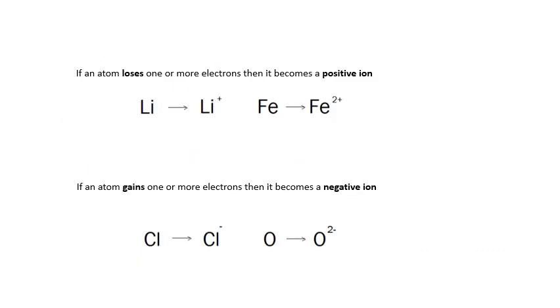Last slide. If an atom loses one or more electrons, then it becomes a positive ion. If lithium loses an electron, it becomes Li plus, a lithium ion. If an iron atom loses two electrons, it becomes Fe2 plus. That's an iron ion. Metals become positive ions. Metals lose electrons and become positive ions. If an atom gains one or more electrons, then it becomes a negative ion. If a chlorine atom gained an electron, it would become a chloride ion, Cl minus. If an oxygen atom gained two electrons, it would become an oxide ion, O2 minus. Getting very chemistry here.